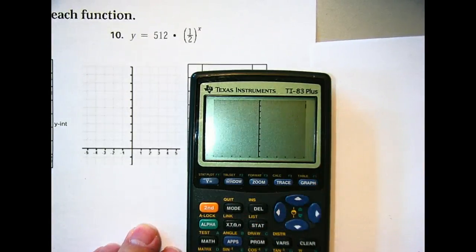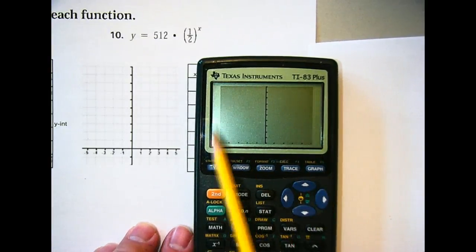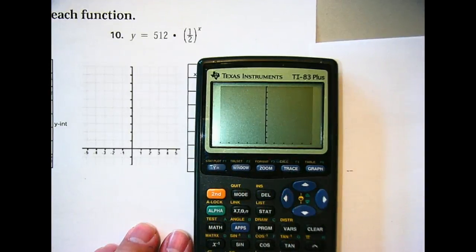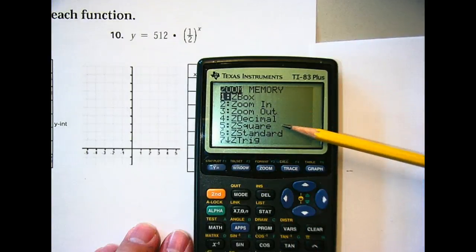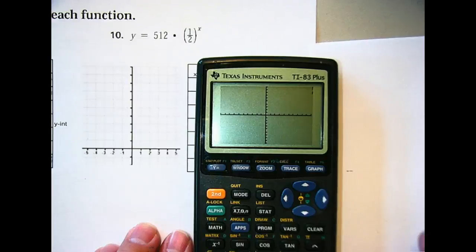I hit graph, and my window's all messed up from our last problem, so what I'm going to do, anytime I want to get back to the original, the standard viewing window, we use a zoom feature. Everyone go to zoom. Hit zoom, and we're hitting zoom. Which one? Zoom out. No, keep reading. You could zoom out. It'll never get you right where you want to be. Zoom standard. Yeah, we want the standard, man. We're setting the standard, zoom standard. Okay, and then there we go. There's our graph. It's just kind of hanging over here.